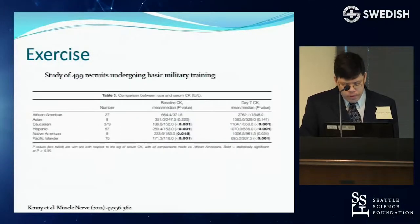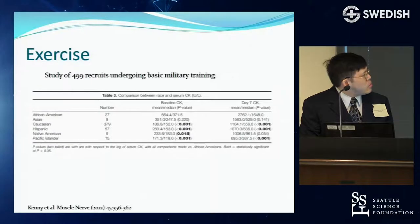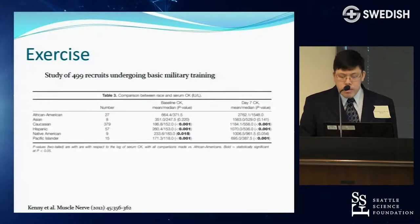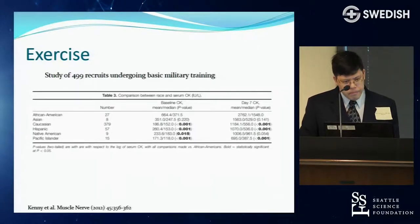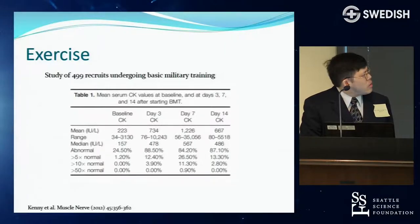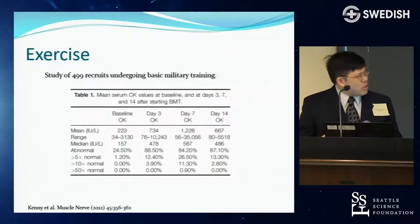In about 500 military recruits after seven days of basic training, CK increased about five to six times baseline across all ethnic groups. Almost 90% of them would have been in the abnormal range based on standard lab cutoffs. So the question becomes: what is really normal versus abnormal?